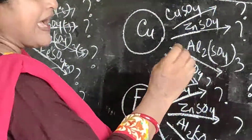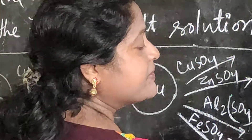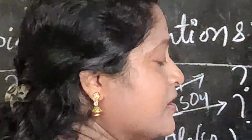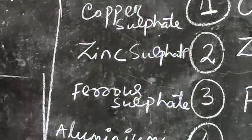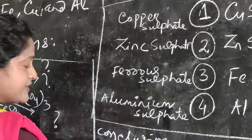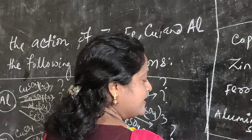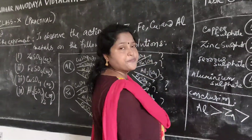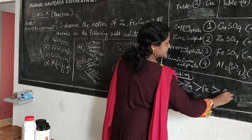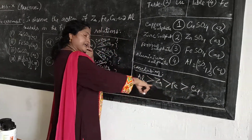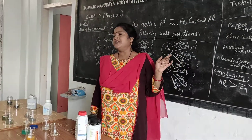I am giving you the conclusion. From this practical, you will get: aluminium metal is more reactive than zinc, then iron, then copper. So this is the reactivity series and this is your practical 3.